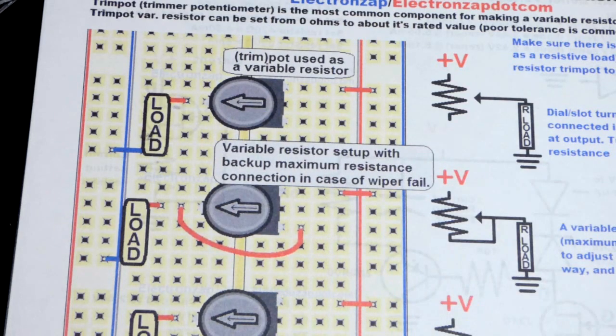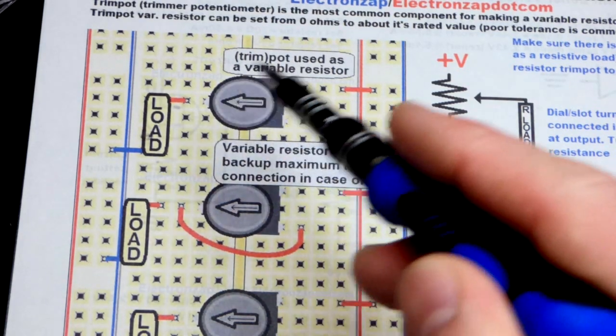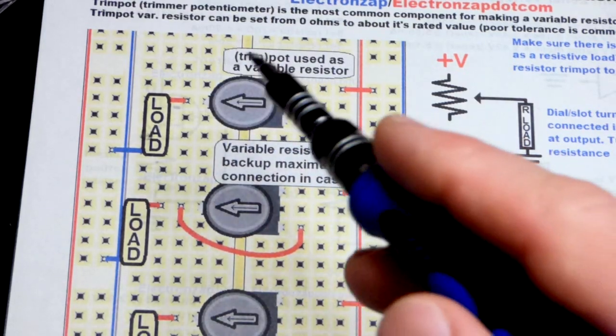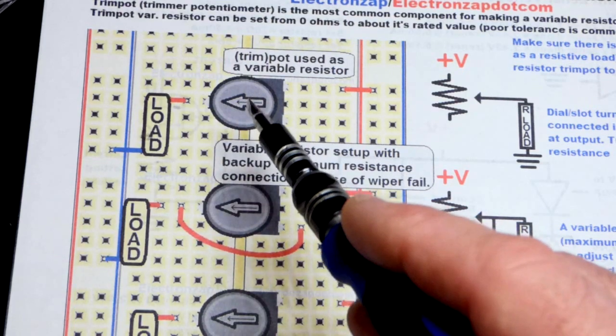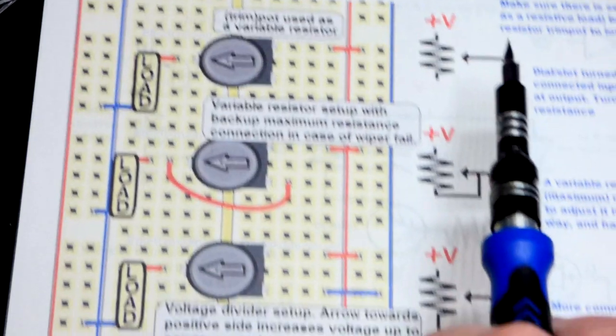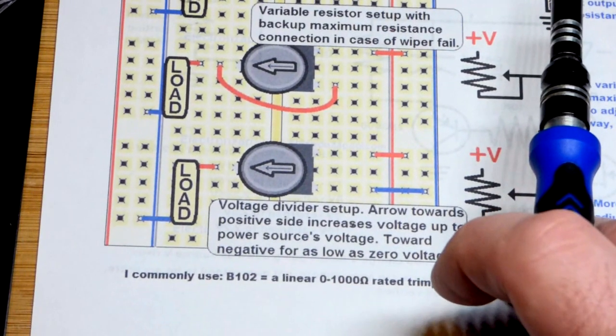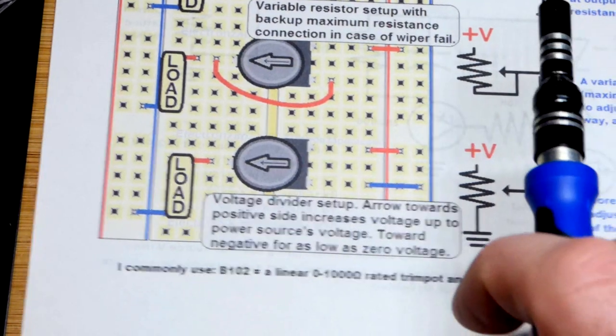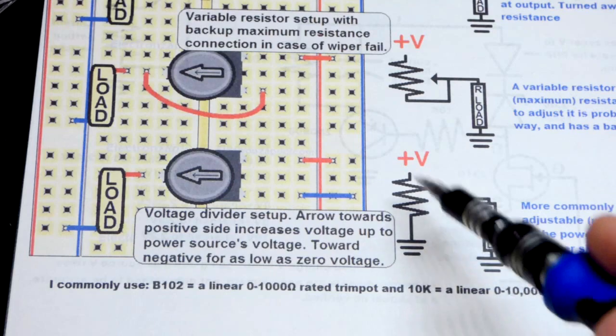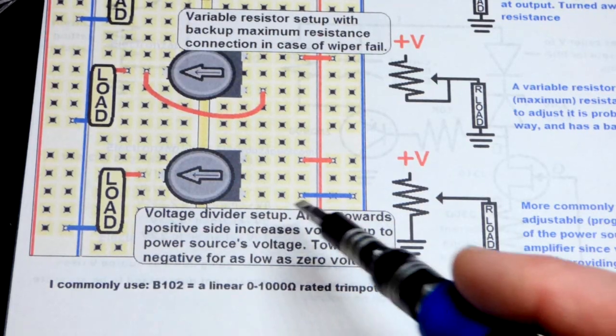You can use it exactly as a variable resistor. Depending on where you turn the dial determines the resistance within the component within its rated limit. I usually use a 10 kilo ohm trim pot but there's all kinds of values out there. You can tie both ends of the resistive element together and make a voltage divider.